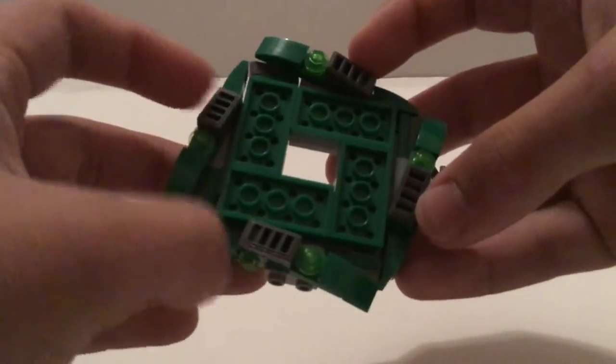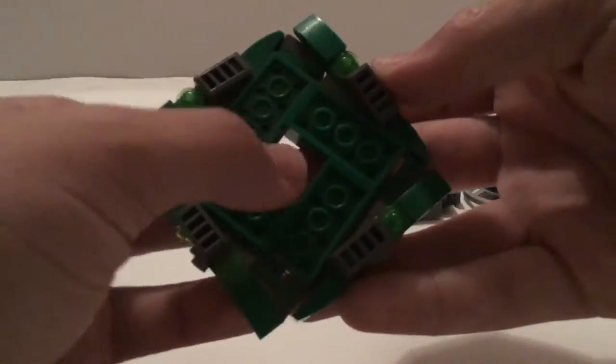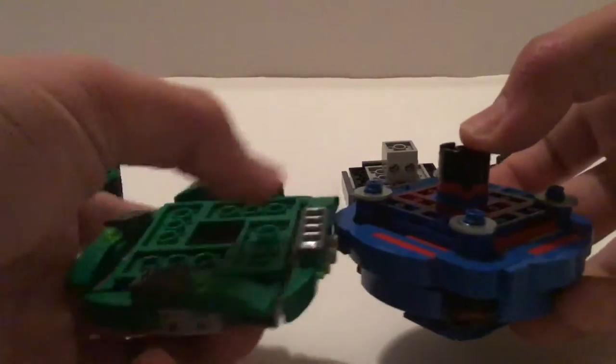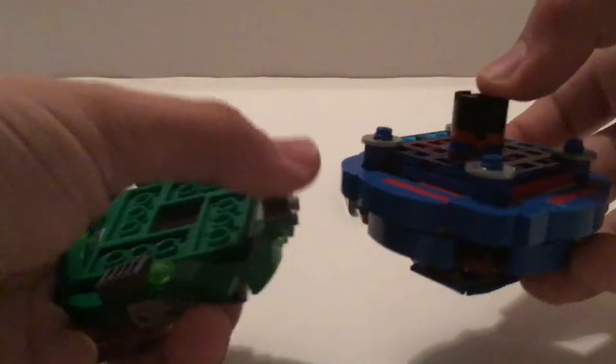Actually move inward, so it changes shape to this. And what that does is whenever the other Bey hits it, it goes in, so it kind of absorbs the hit. And then they come right back out.